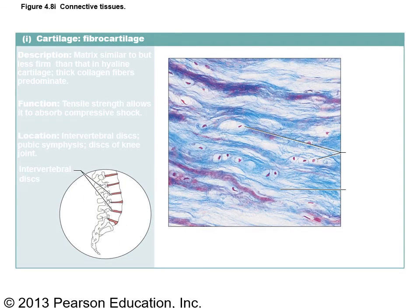Fibrocartilage is the third type of cartilage, containing very thick bands of collagen fibers. The cells reside in lacunae — remember these are called chondroblasts. This tissue resists compression and is very strong. You find fibrocartilage in intervertebral discs, where it surrounds the disc to resist compression, and also in the knee, which takes a significant beating as a joint.